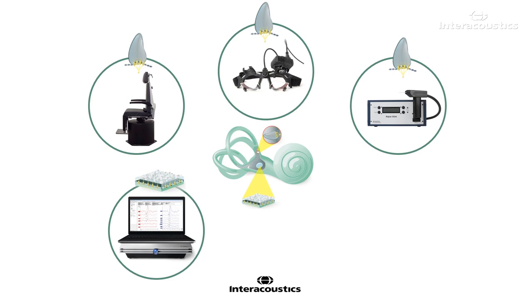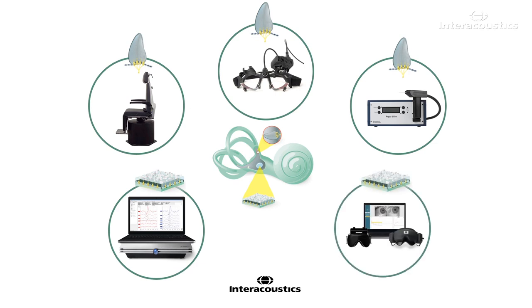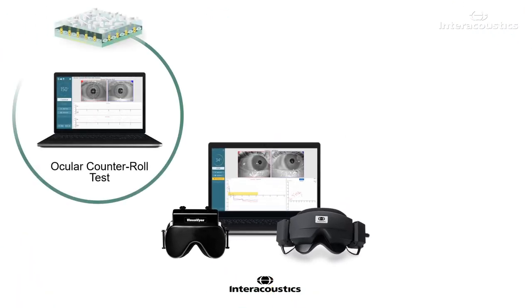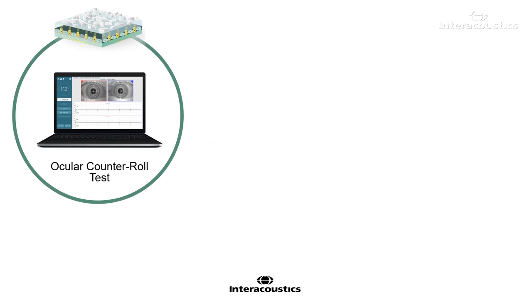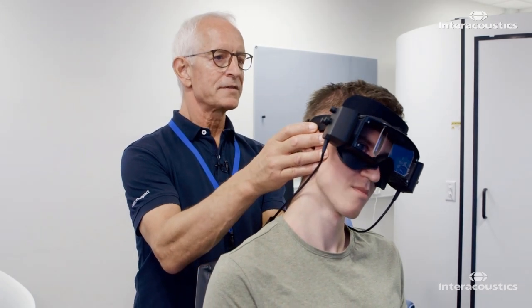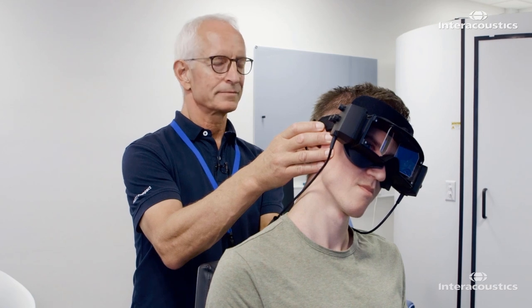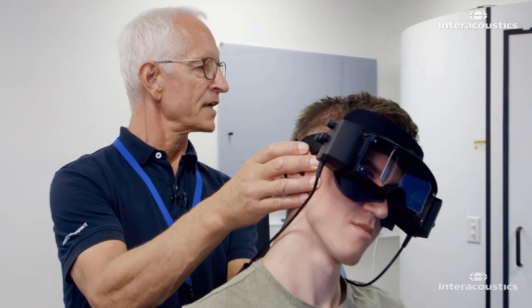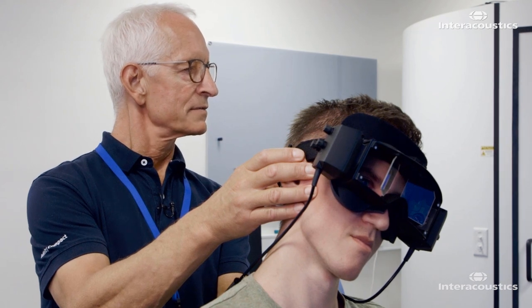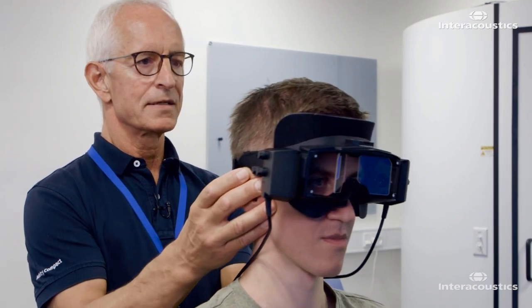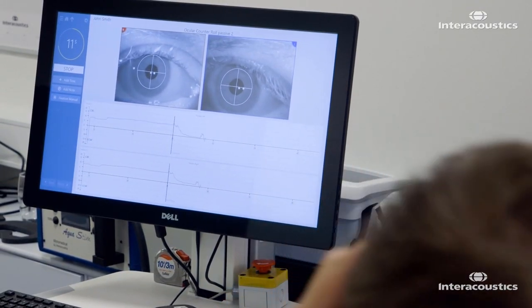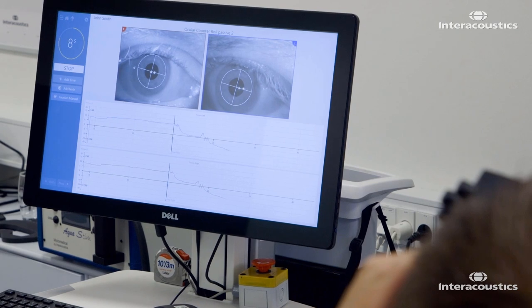The third generation of VisualEyes software offers two options for this purpose. The first one is the ocular counter roll test. It consists of tilting the head toward either the right or left shoulder in the roll plane. As you can see in this video, the head starts upright and then tilted left and held there for several seconds. Then the head is returned to the upright position and then tilted to the right.